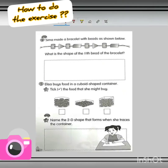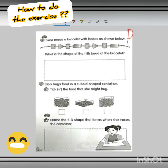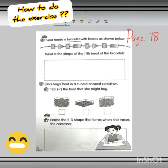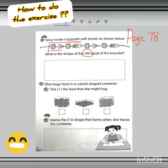We continue the exercise on page 78. Look at question number 4. Sima made a bracelet with beads as shown. The beads are 3D shapes. What is the shape of the 11th bead of the bracelet? Now we check the pattern here. It starts with cylinder, cone, cylinder, cuboid — then it repeats again. This is the pattern.